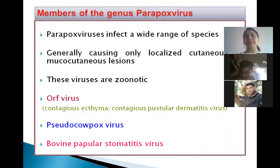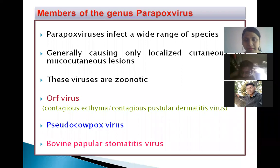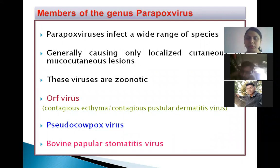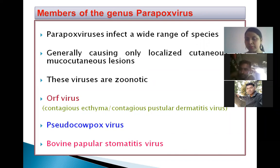Coming to the genus Parapoxvirus, this genus contains different viruses affecting a wide range of species. It generally causes cutaneous or mucocutaneous lesions, and these are zoonotic in nature. Viruses in this genus include the ORF virus, also known as Contagious ecthyma or Contagious pustular dermatitis virus, Pseudo-cowpox virus, and Bovine papular stomatitis virus.